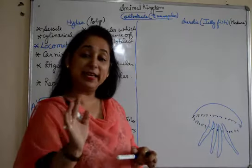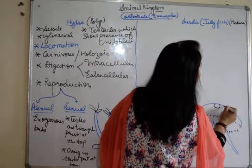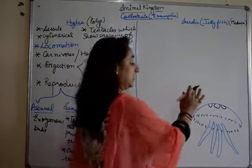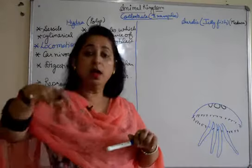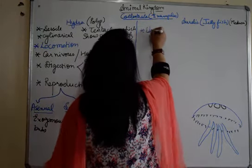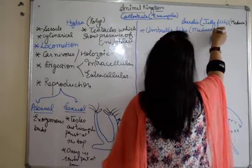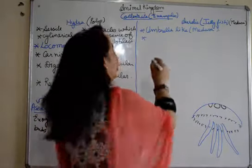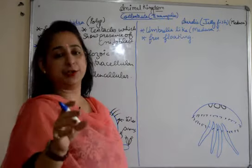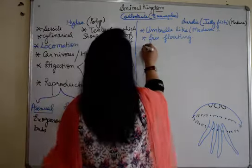As it is transparent, jelly-like, we can see the gonads also here, and these gonads are horseshoe-shaped. It is umbrella-like medusa. Then it is free-floating, not sedentary, not stationary. It is not attached to a substratum. It can move freely from places.